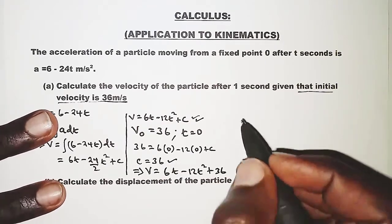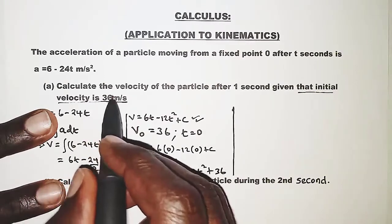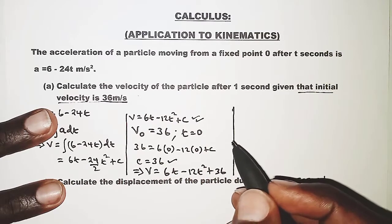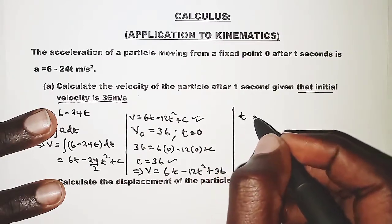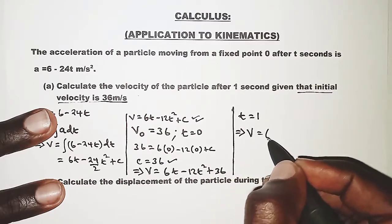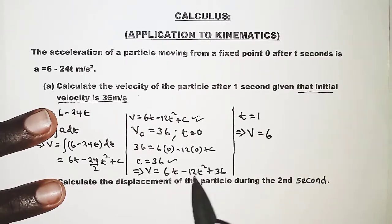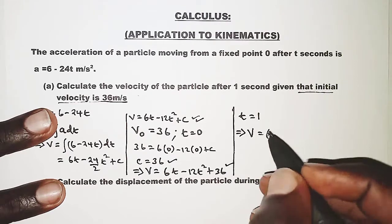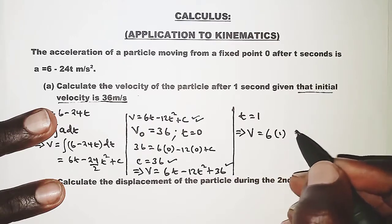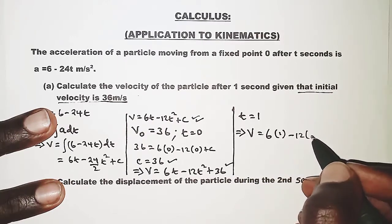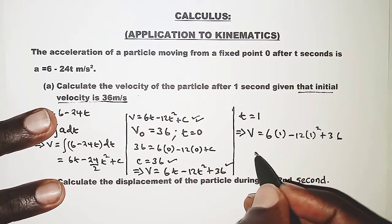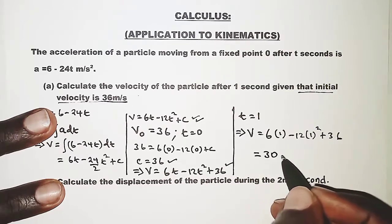We can now calculate the velocity of the particle after one second, so t = 1. Substituting into the velocity equation: v = 6(1) minus 12(1)² plus 36. From the calculator, this gives 30 meters per second.